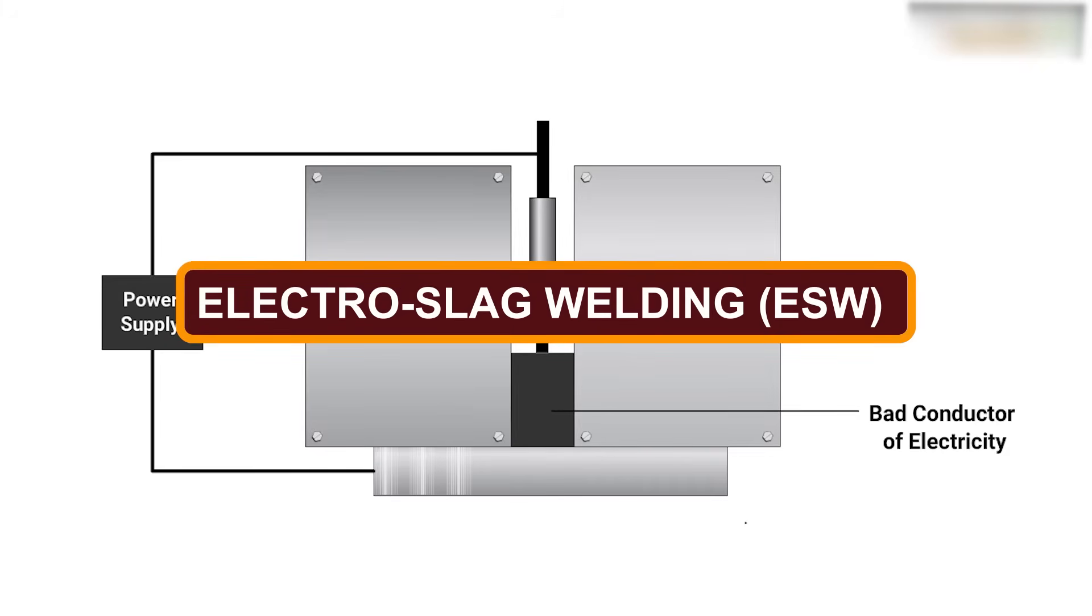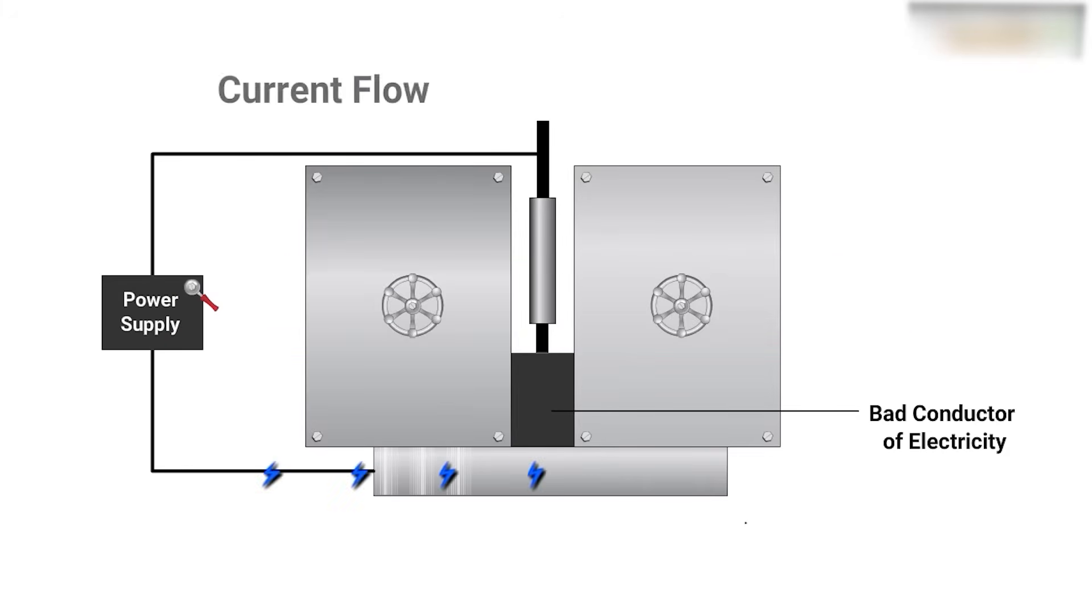Electro Slag Welding (ESW) is a vertical process used to weld thick plates in a single pass. It relies on an electric arc to start before a flux addition extinguishes the arc.